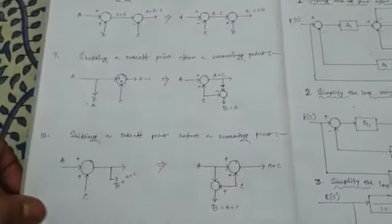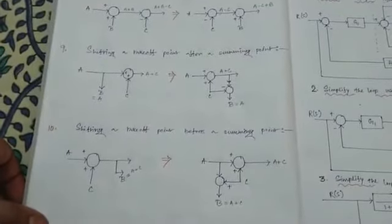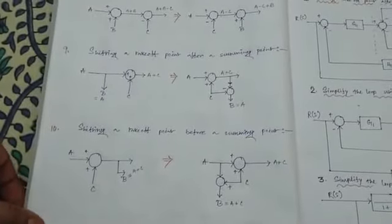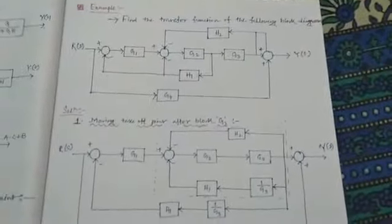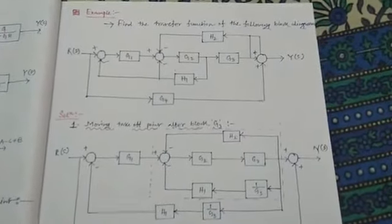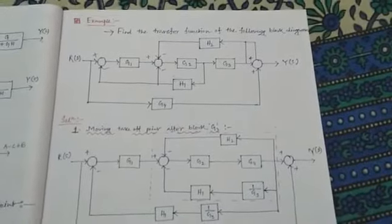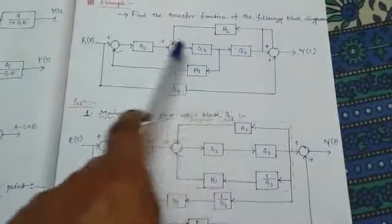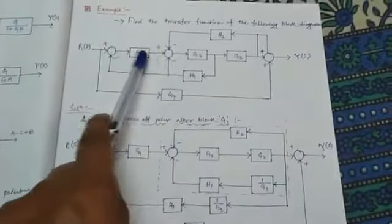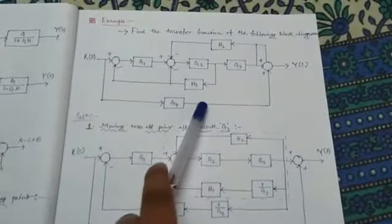These are the rules required for block diagram reduction. Now here is an example. Find the transfer function of the following block diagram. There is a forward path with system gains g1, g2, g3, and another forward path with gain g4. The feedback path has gains h1 and h2.